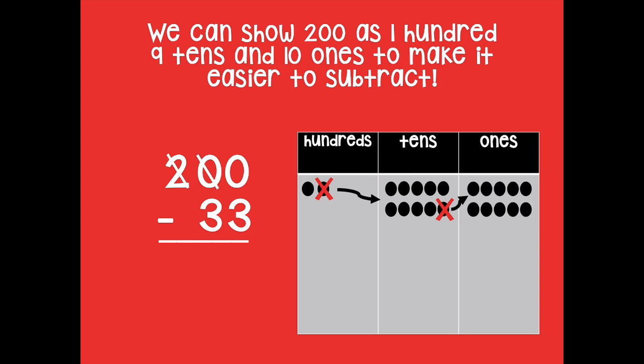So now we're left with 100, 9 tens, and 10 ones. And now we can definitely subtract. Start in your ones place. 10 minus 3 equals 7.